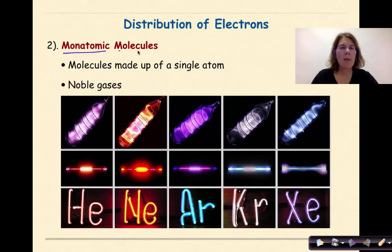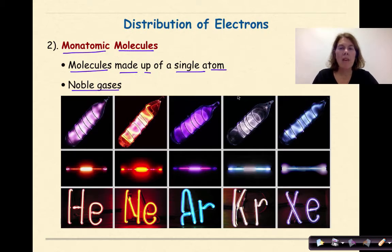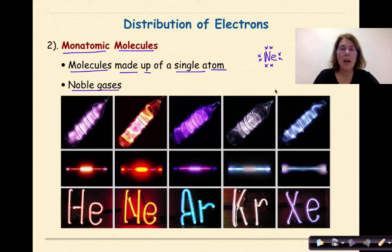The next type is a monatomic molecule. These are molecules made up of a single atom, including the noble gases. Each noble gas typically has eight valence electrons. We could think of neon as an example — neon has eight valence electrons surrounding it in its outer valence shell, giving it an equal distribution of electrons. Therefore, it's a monatomic molecule.